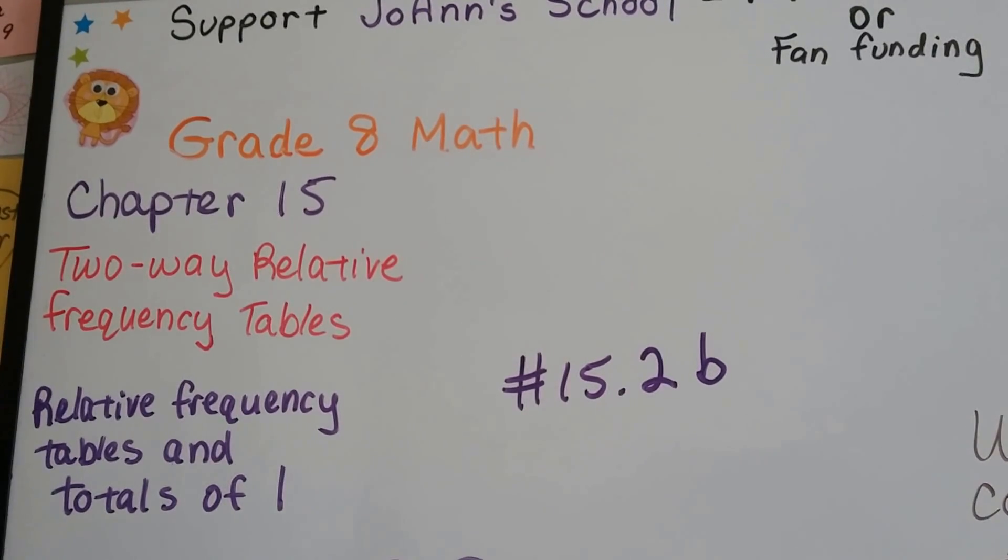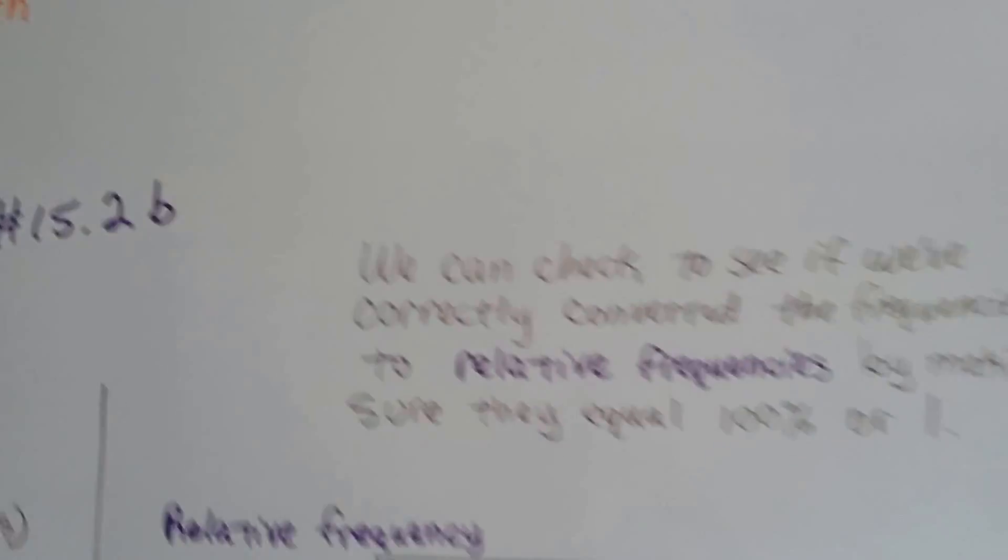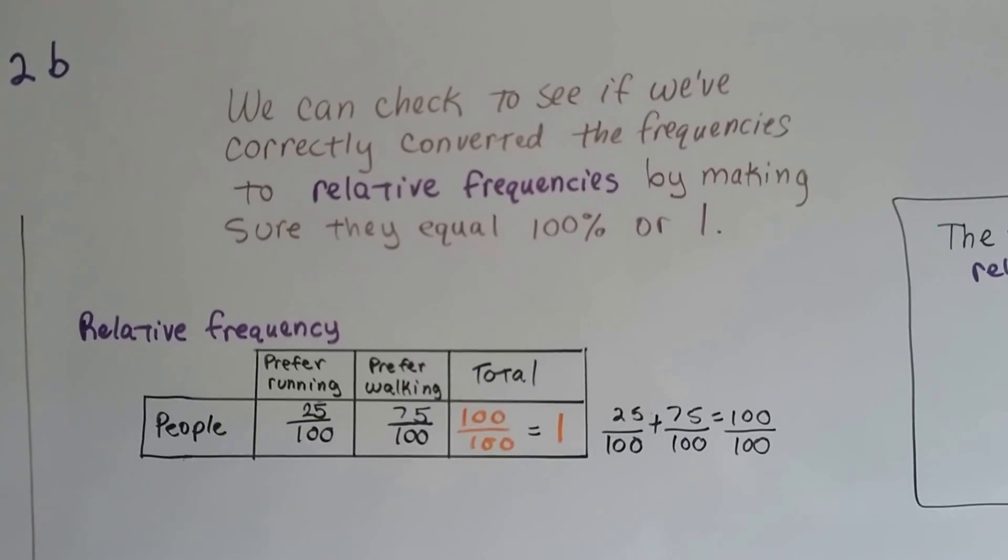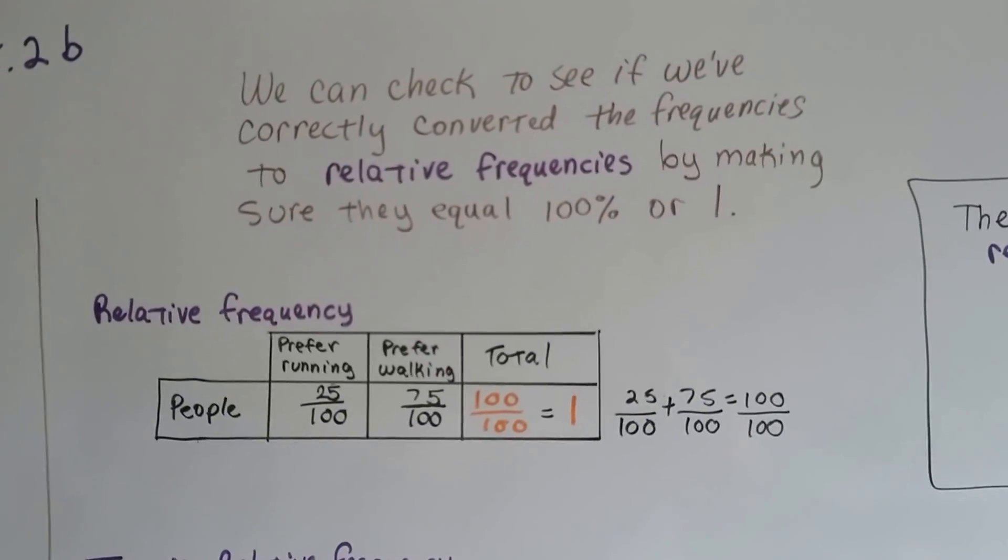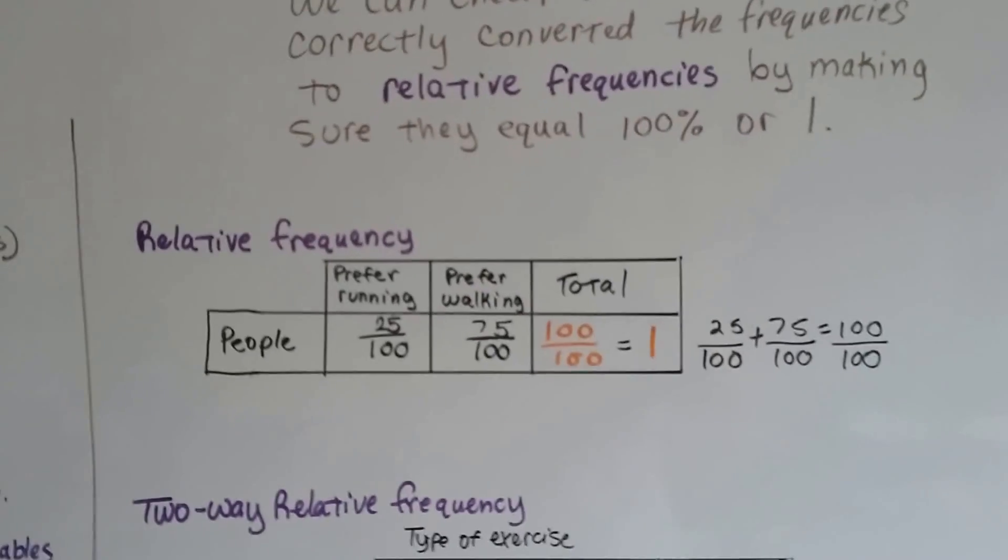I'm going to explain why relative frequency tables have totals of 1 or 100%. We can check to see if we've correctly converted the frequencies to relative frequencies by making sure they equal 100% or 1.